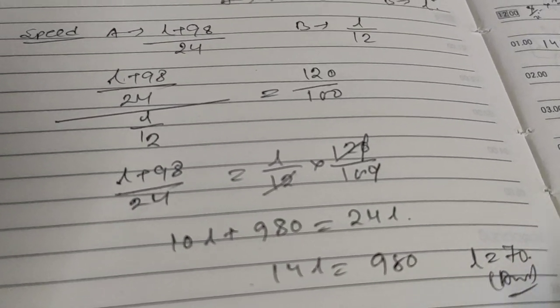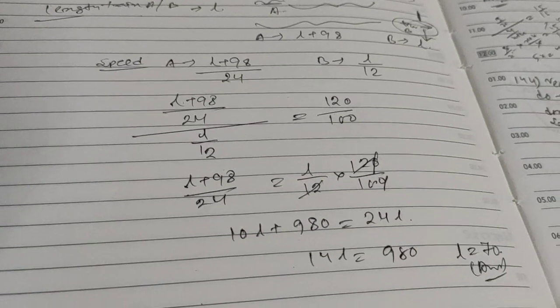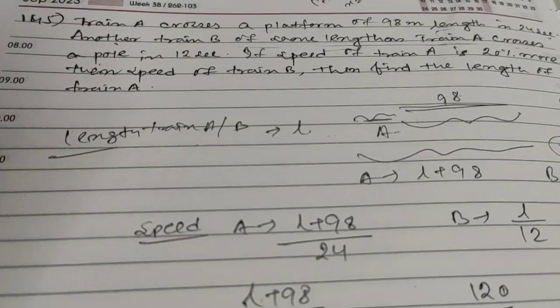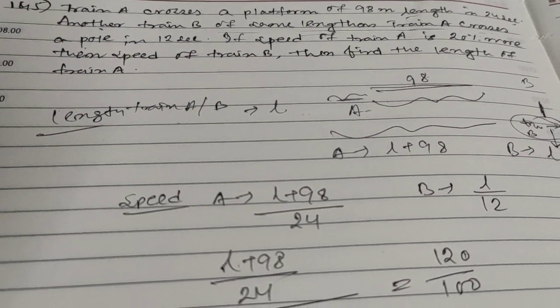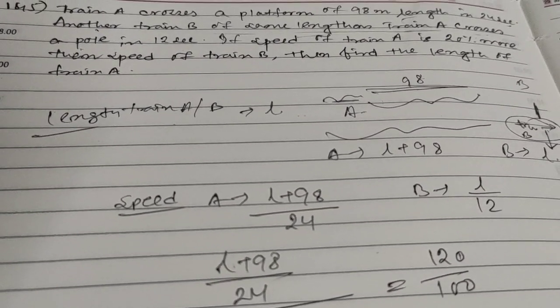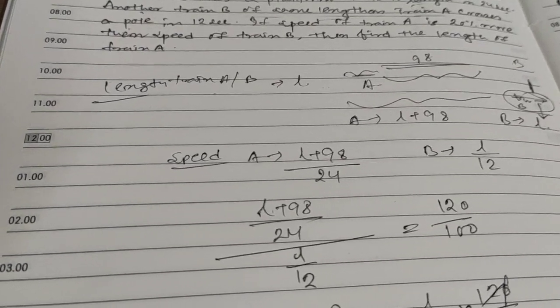So the length of the train is 70 meters. This is the answer. If you have any questions or doubts, you can post in the comment section. I will try to resolve. Thank you.